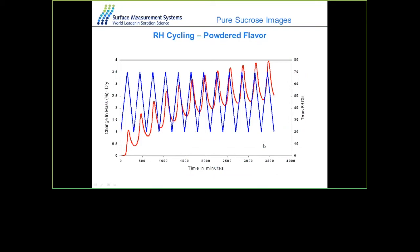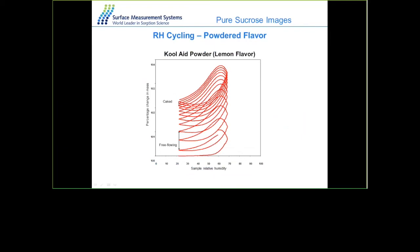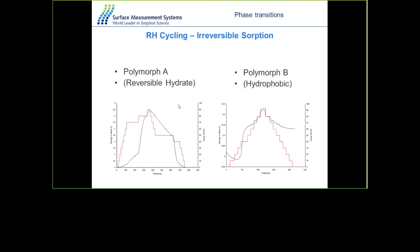Cycling methods involve repeatedly increasing and decreasing relative humidity, showing that some moisture is retained each time you return to zero. This is more obvious in adsorption-desorption isotherms where the free-flowing powder shows an open loop hysteresis, but as the material cakes, this loop closes. Polymorph differences between polymorph A and B are very obvious — very low uptake for polymorph B but significantly higher, over 4%, for polymorph A.